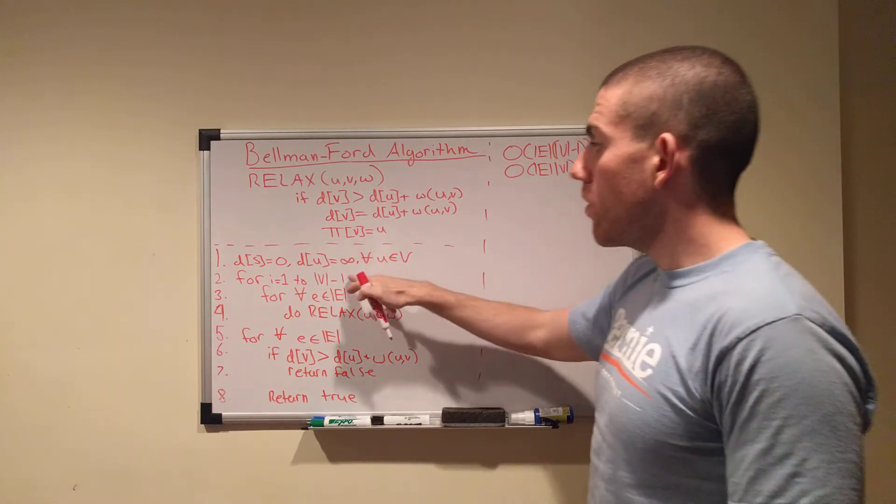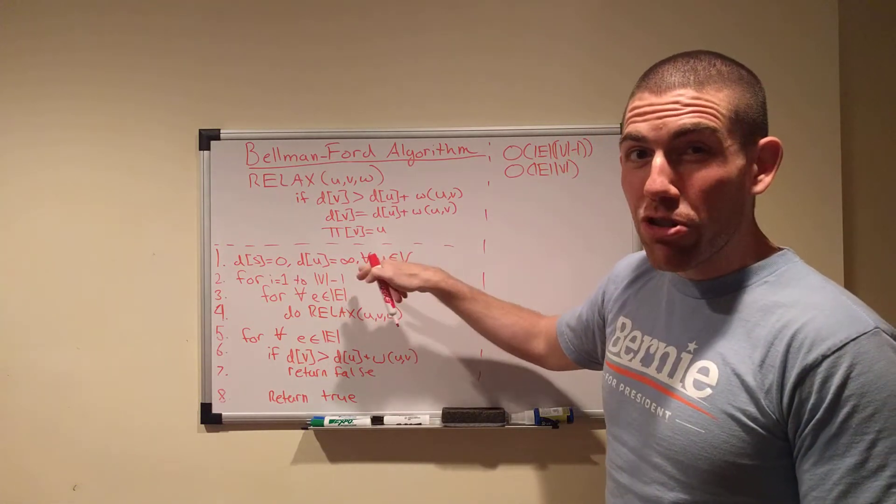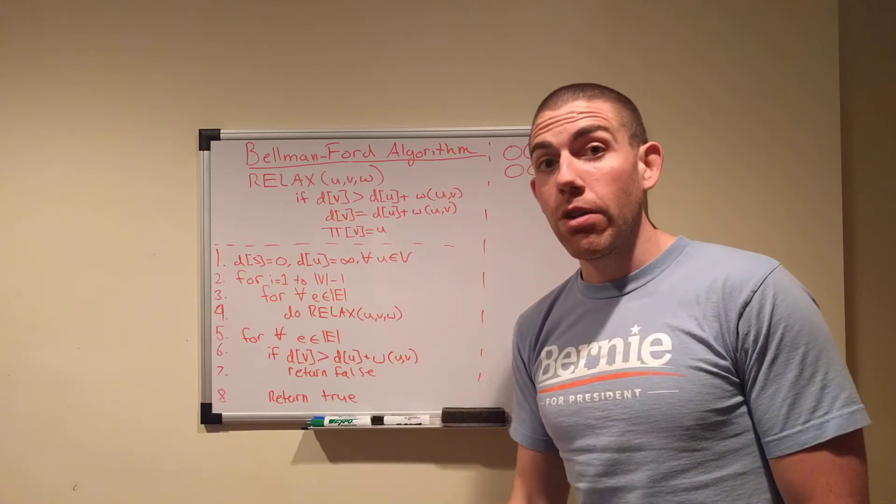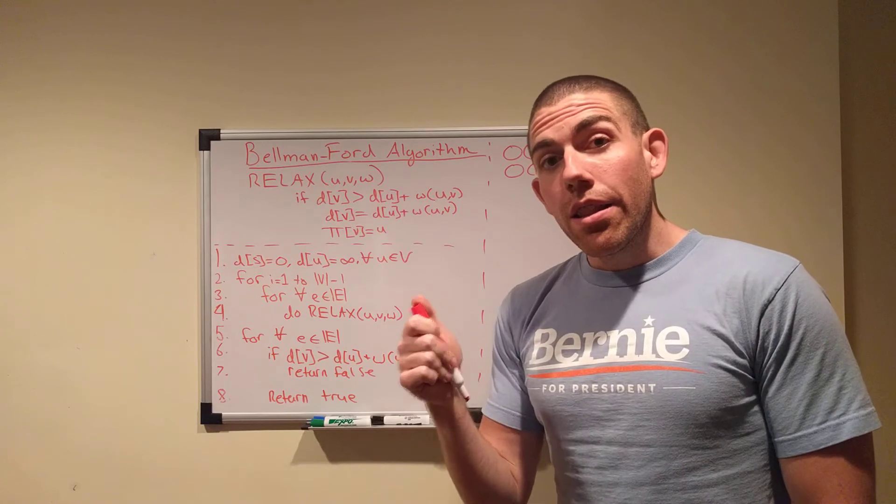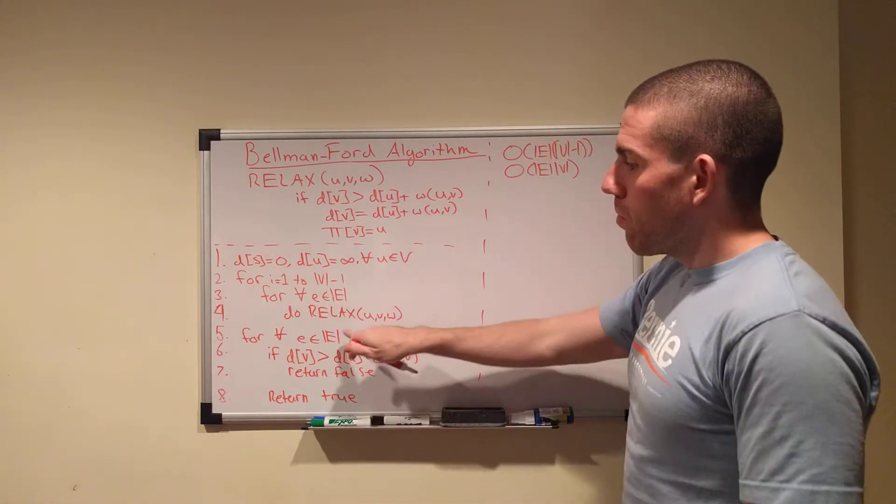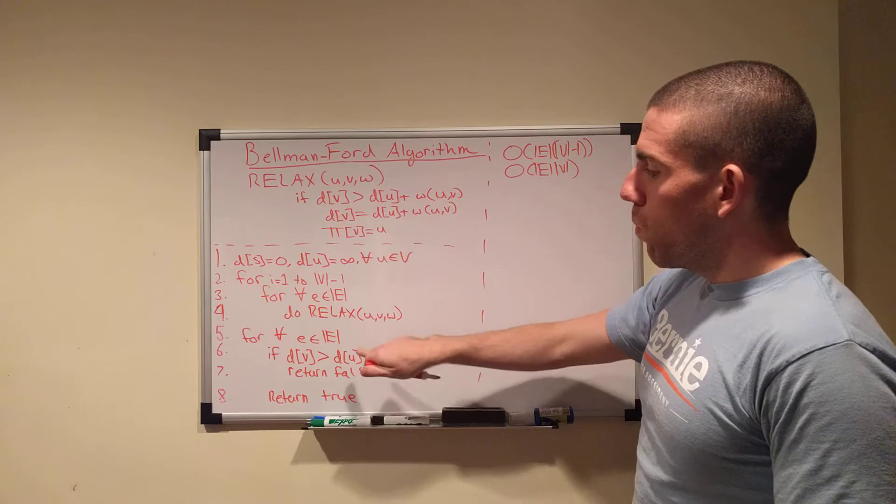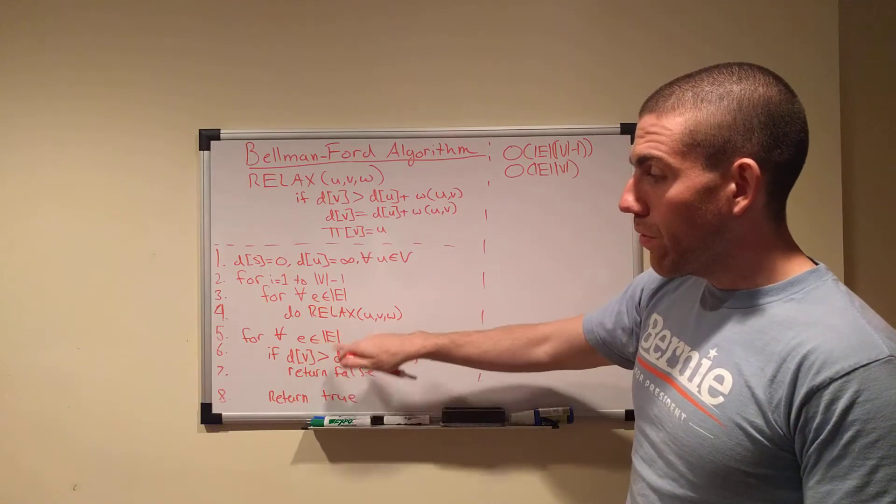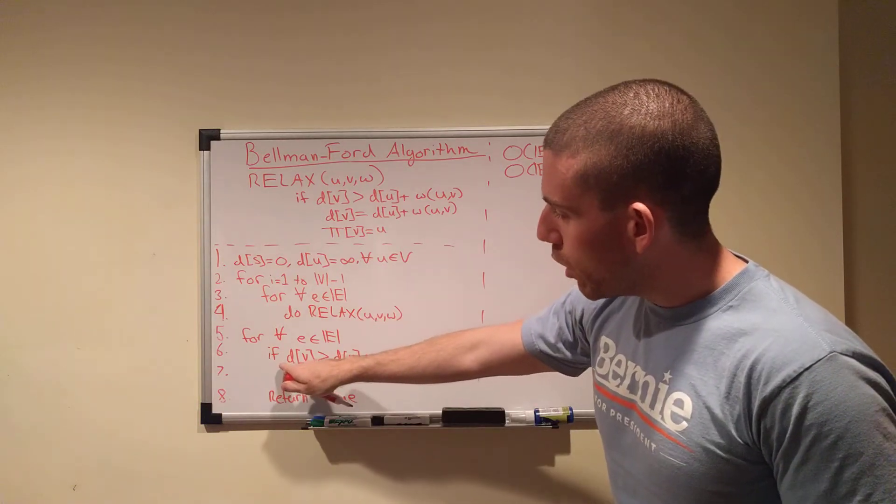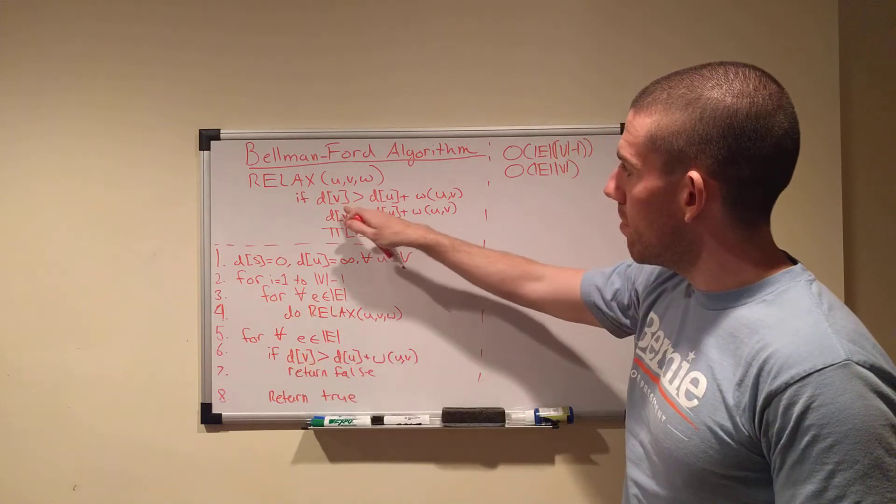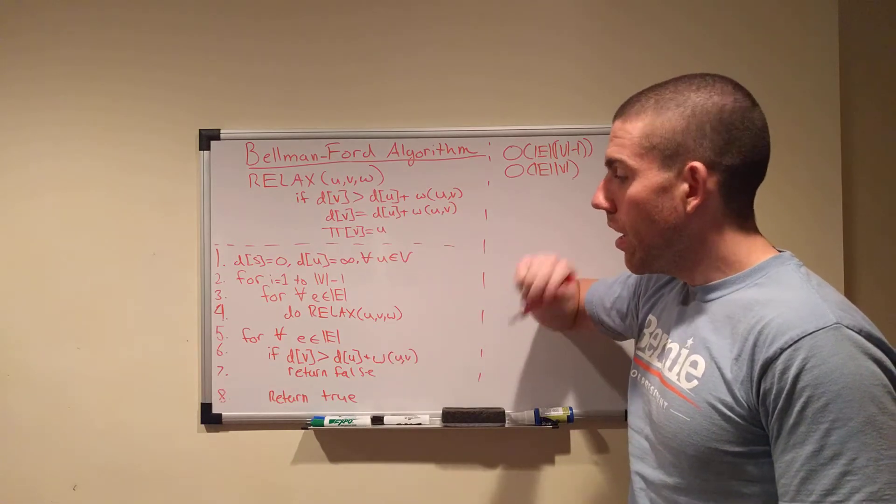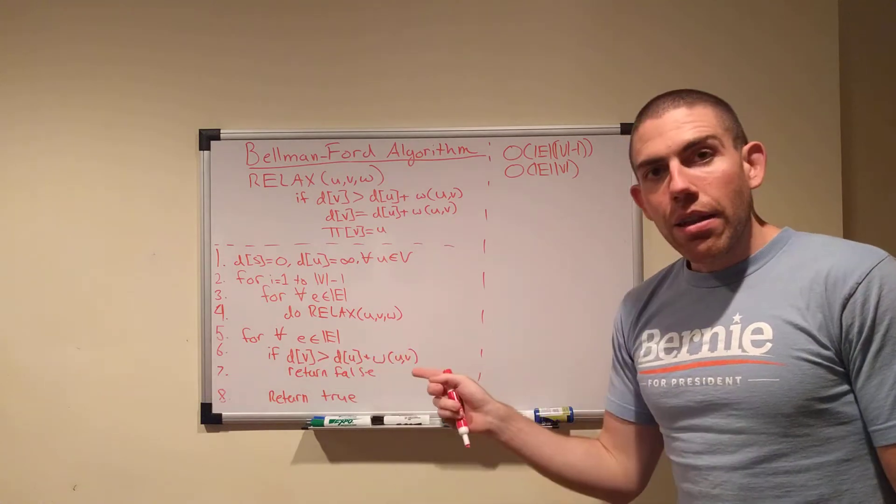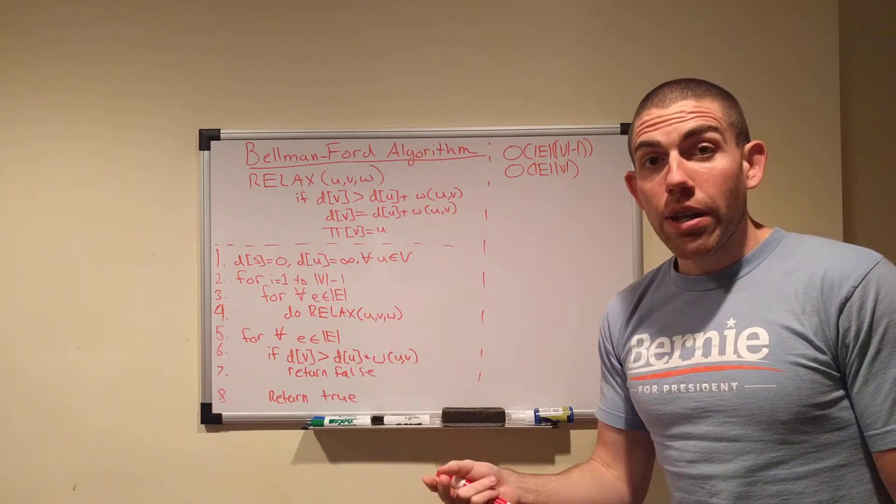You're going to do V minus 1 iterations, relaxing at every edge. And that should, once you've completed the V minus 1 iterations, that should give you shortest paths to every node. But, what if you have a negative weight cycle that you haven't noticed yet? That's where the genius of Bellman-Ford comes in. It runs relax one more time on every edge.